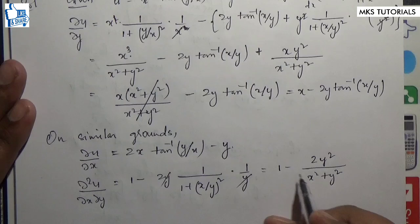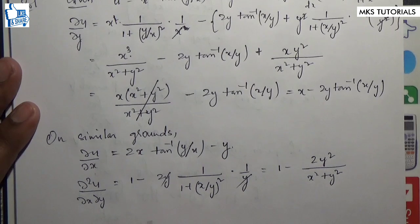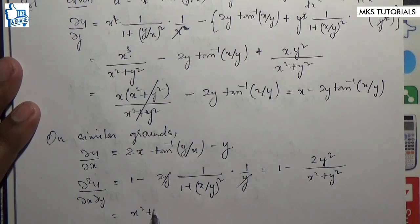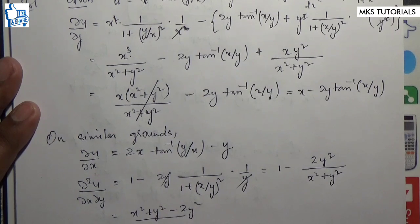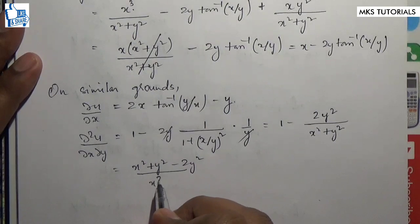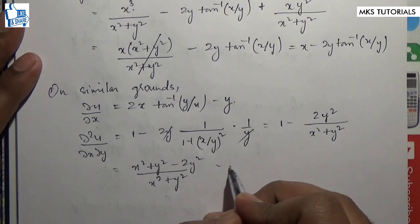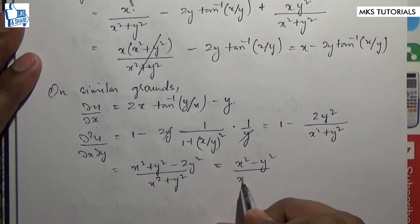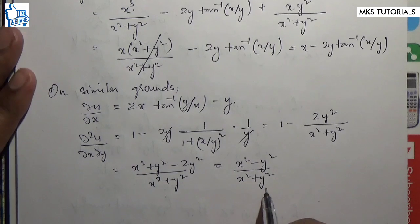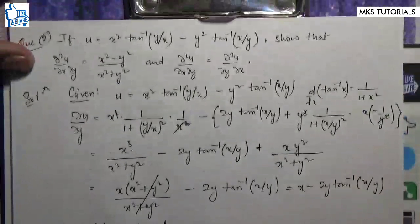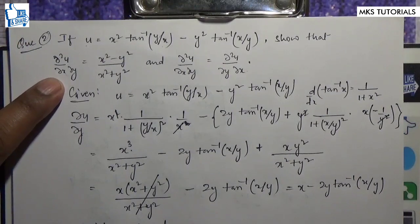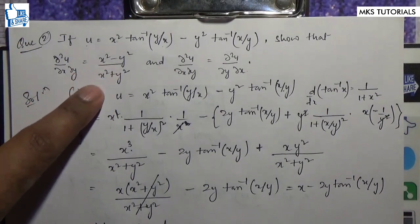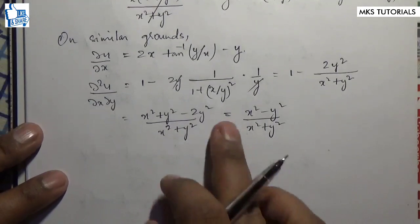Simplifying further through the terms — 1 plus y², x²y², and combining — ∂²u/∂x∂y equals (x²-y²)/(x²+y²). Look at that — I have to get this result, and I have.